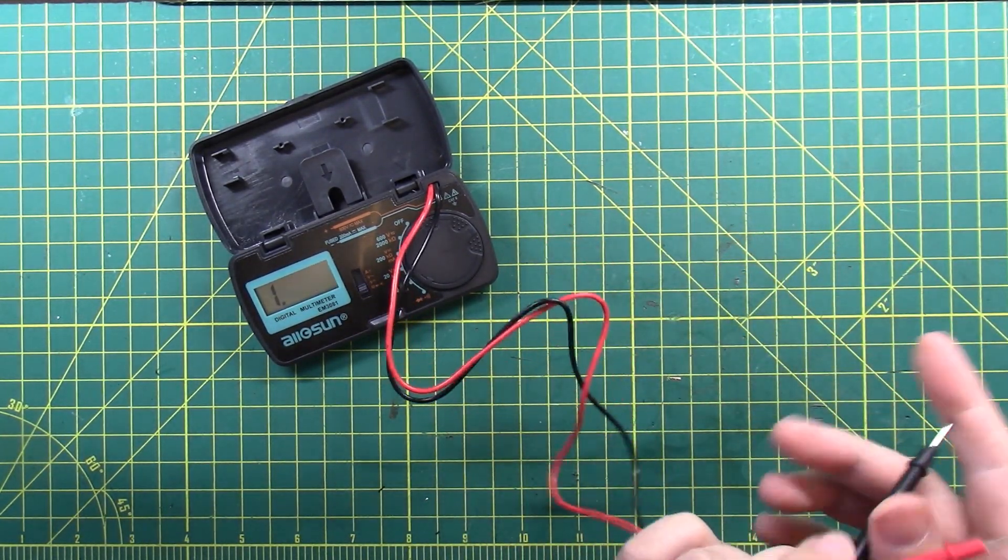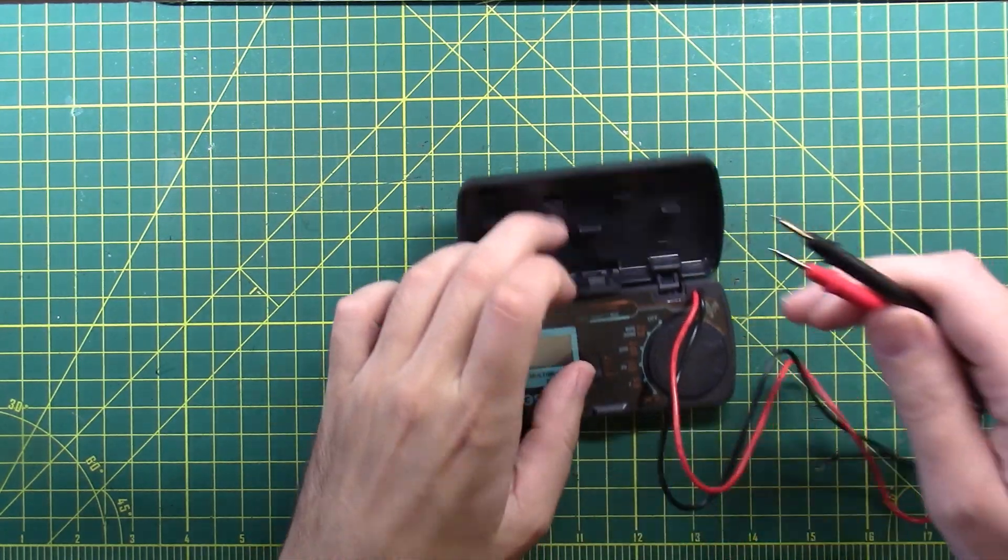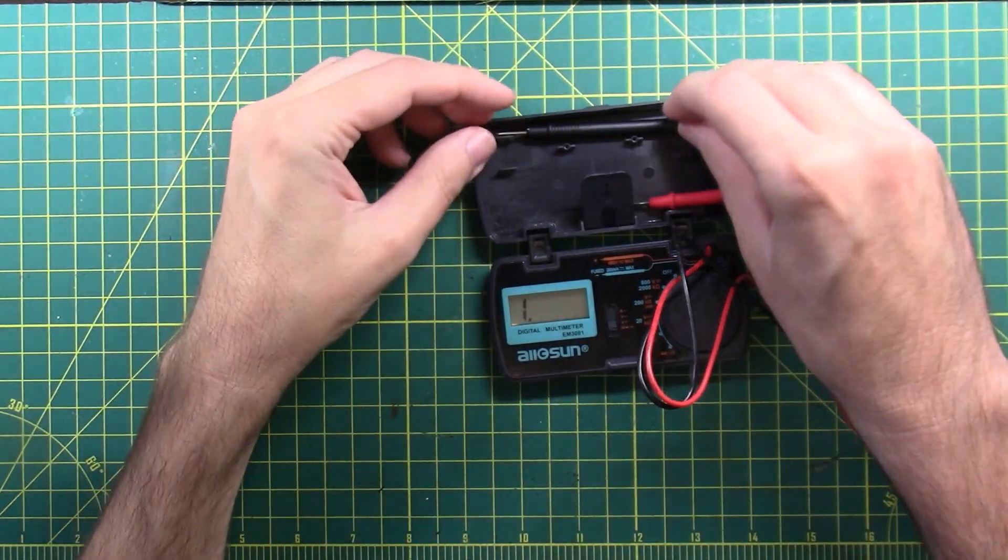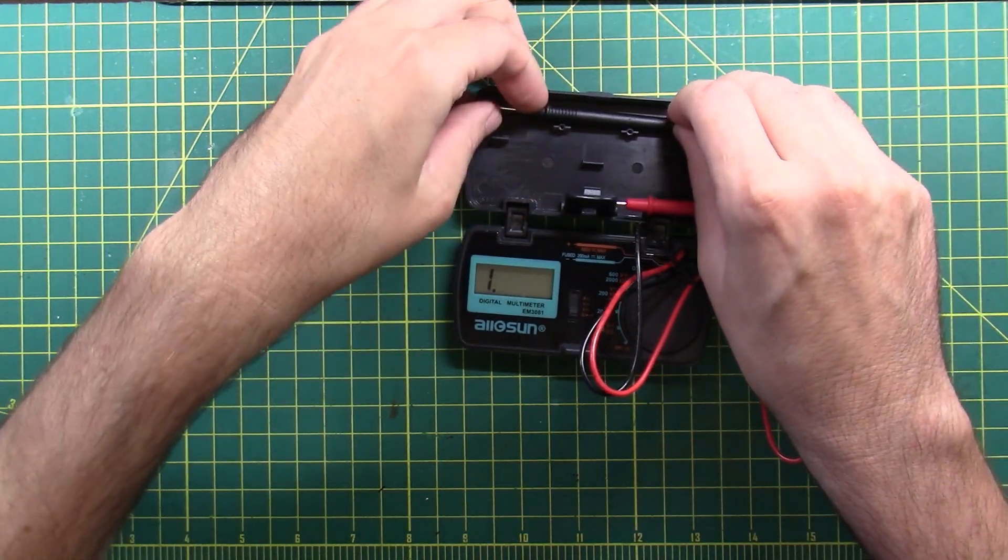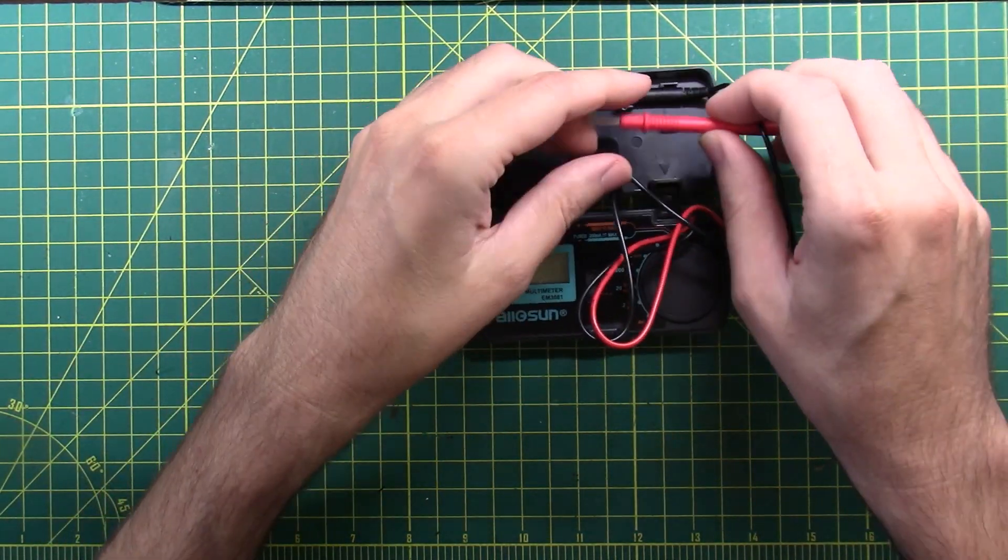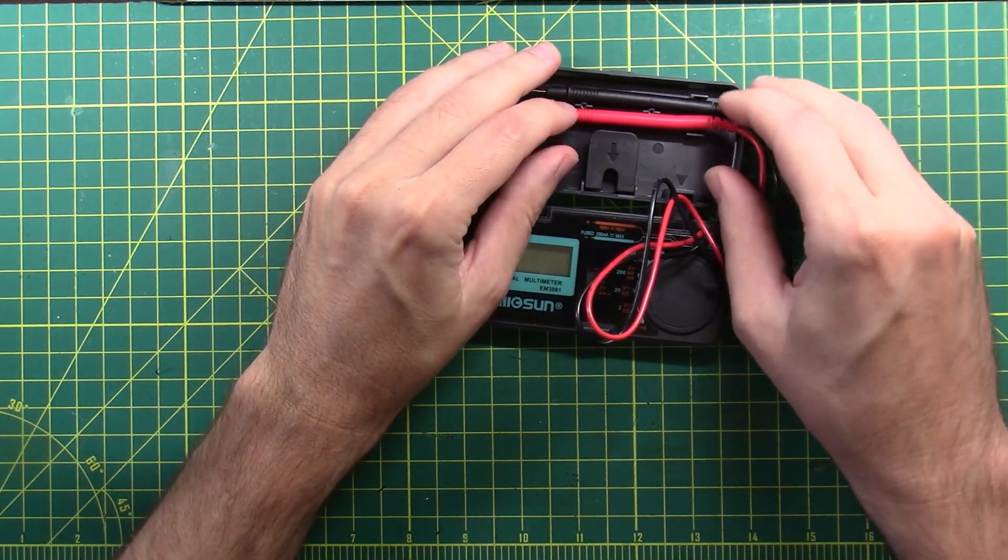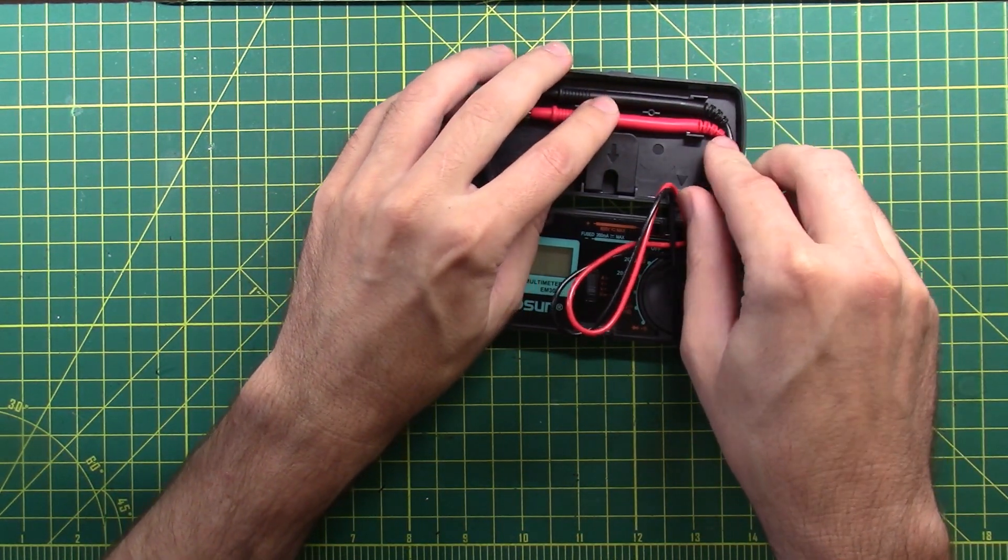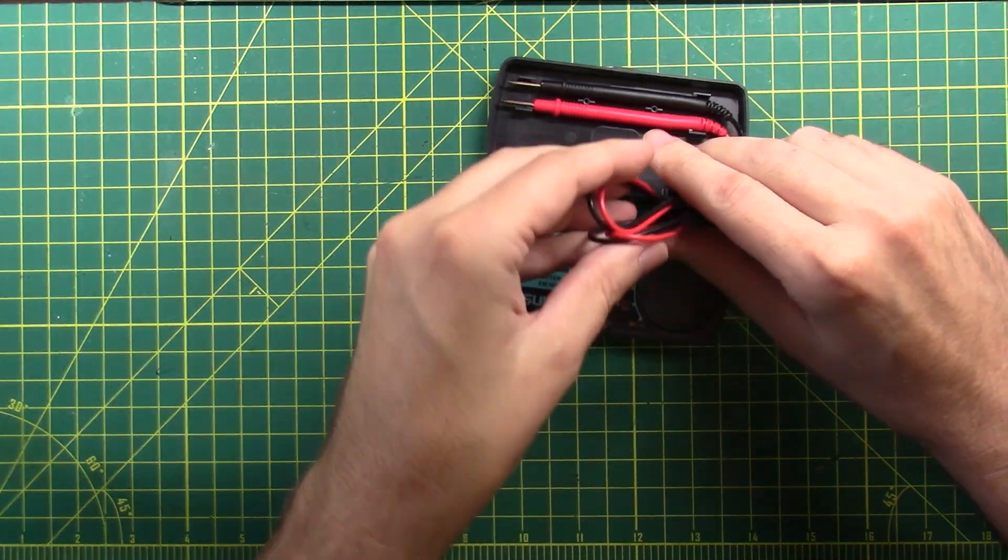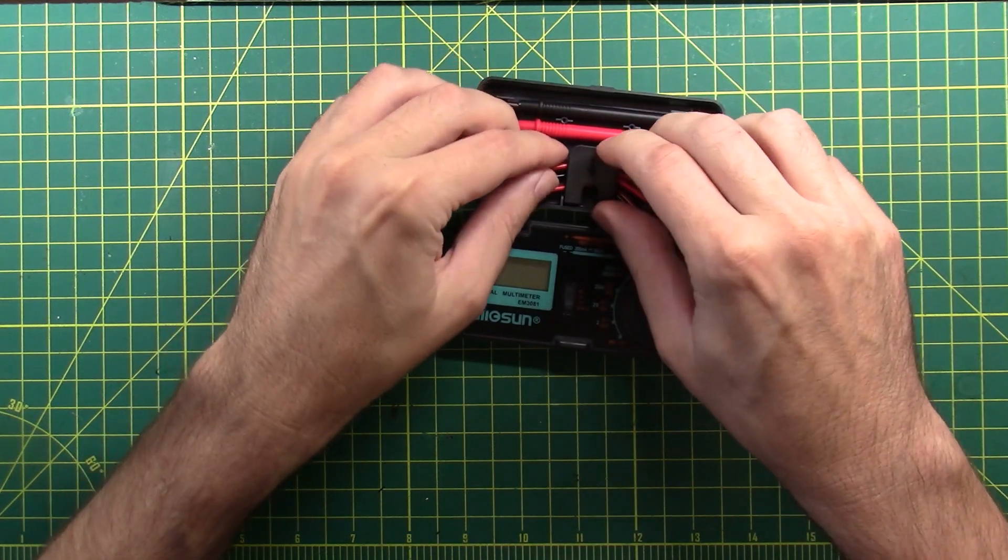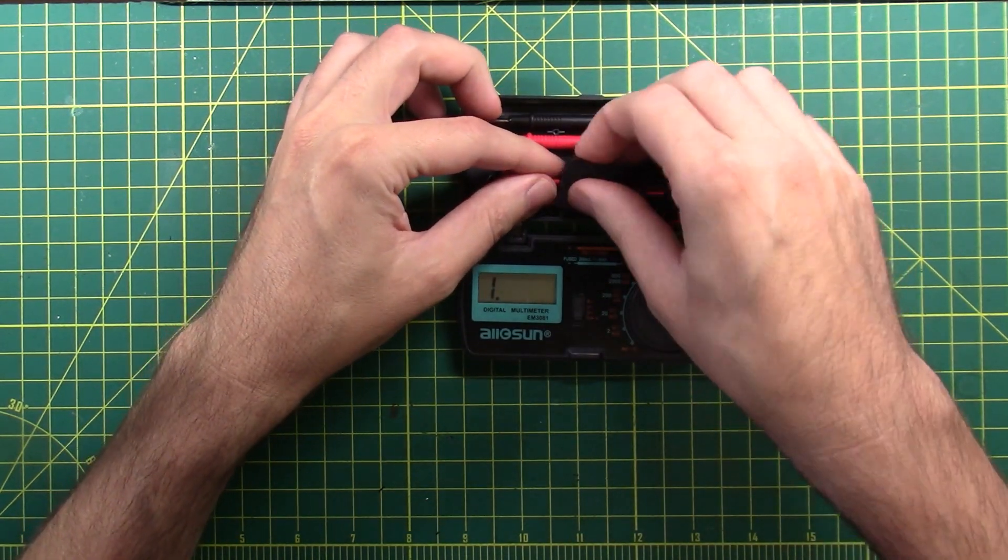What do I use a multimeter for in this hobby? I really use the continuity test absolutely 100% the most out of every feature that there is on here. Next up I use the resistor functionality. Resistors have color codes on them. I can read the color codes. It's very difficult. I have some trouble with the tolerance bands and some of the colors look like three or four colors to me.